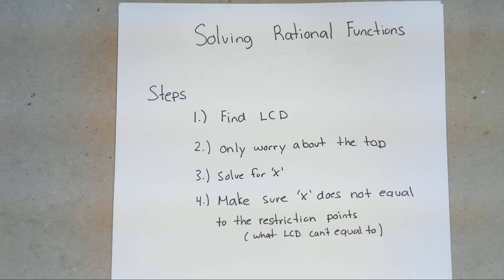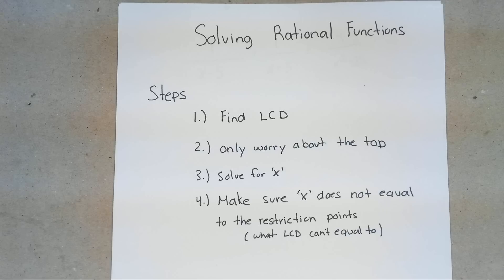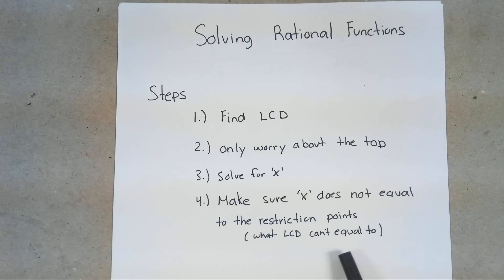Once you find this LCD, you want to work on step two. You only want to worry about the top — find out what's missing and then cancel out the bottom. Your third step is to solve for X. And lastly, after you find X, make sure that X is not equal to the undefined points or restriction points — in other words, what your LCD cannot equal to, which we'll get into when we're working on the problems.